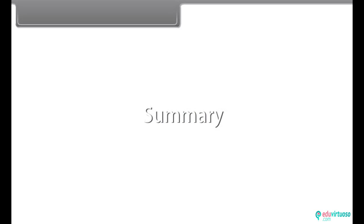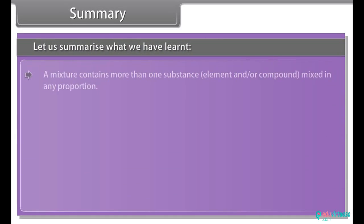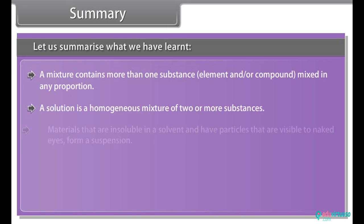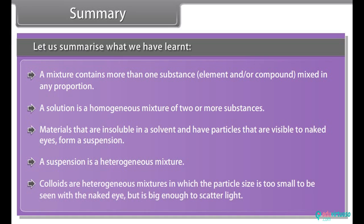Summary: A mixture contains more than one substance — element or compound — mixed in any proportion. A solution is a homogeneous mixture of two or more substances. Materials that are insoluble in a solvent and have particles visible to the naked eye form a suspension, which is a heterogeneous mixture. Colloids are heterogeneous mixtures in which the particle size is too small to be seen with the naked eye but big enough to scatter light.